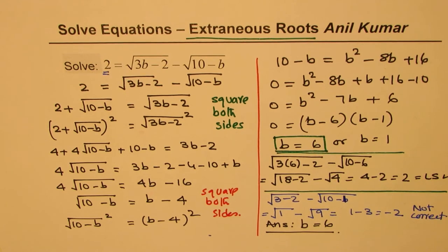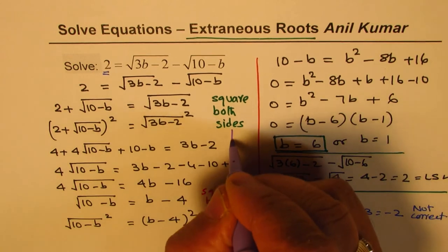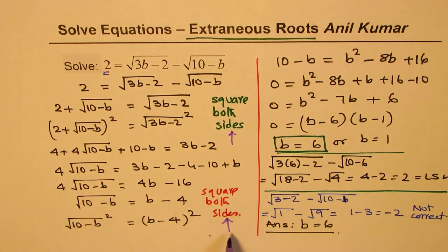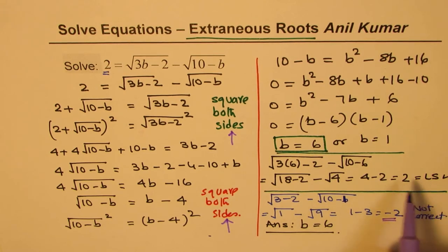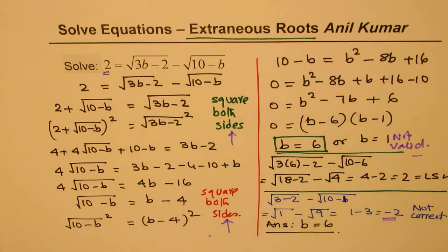So the only solution for the given equation is b equals 6. Is that clear? So that is how we will be solving such equations. And it's very important to understand that this step which we take, squaring numbers makes negative things positive. So negative 2 was made positive. That's why you got the answer 1 also which is not valid. So the only solution for the given equation is b equals 6.